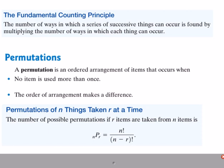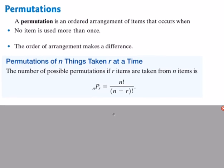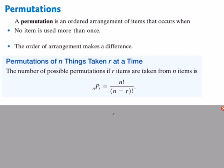A permutation is an arrangement where using the same objects in a different order counts as a different arrangement. The permutation formula uses factorials, shown as an exclamation mark. Scientific calculators have a permutation button, so for this class you mostly need to know what a permutation is and how to find that button, rather than computing factorials by hand.